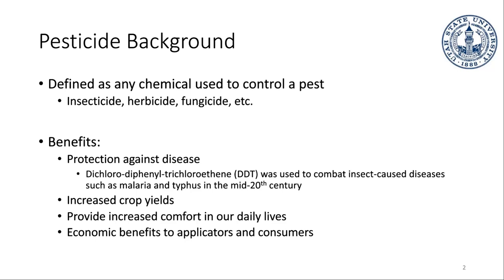The reason we use pesticides is because they have a whole bunch of different benefits — obviously they protect us against pests, and depending on what that pest is, it could give us protection against diseases. In the middle of the previous century, a chemical known as DDT — dichlorodiphenyl trichloroethane — was sprayed pretty indiscriminately, pretty much everywhere, because it combats malaria and typhus.